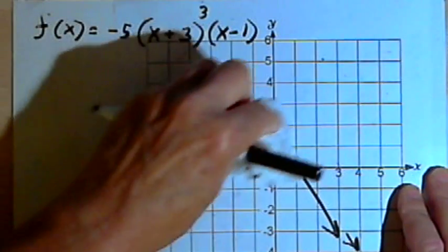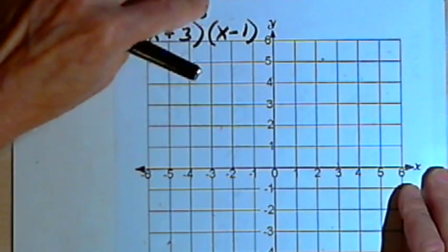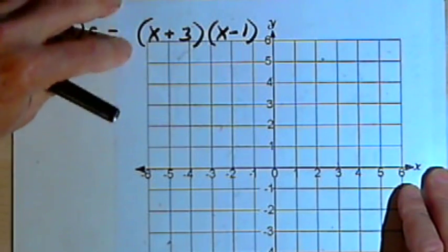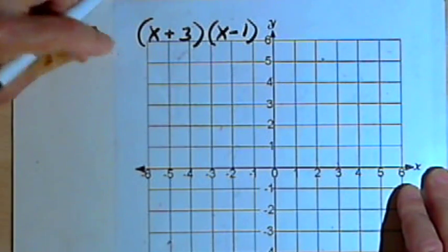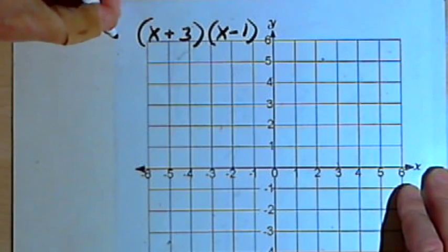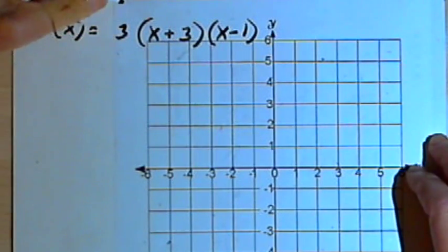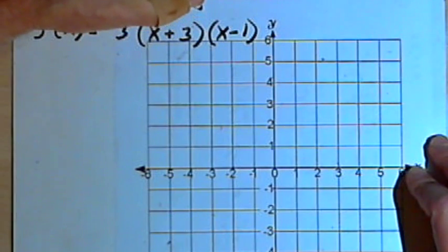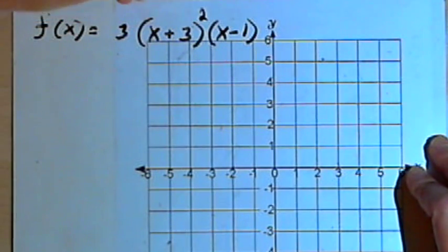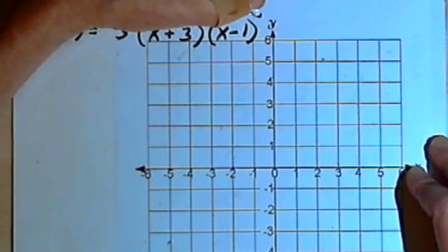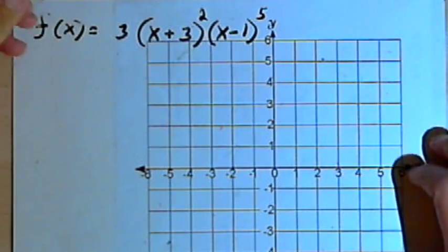And of course, you can combine these. You might have more than one multiplicity in a function. So let's make this positive again. We'll make it 3 times (x+3) squared times (x-1) to the fifth power.